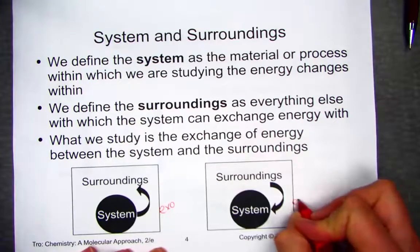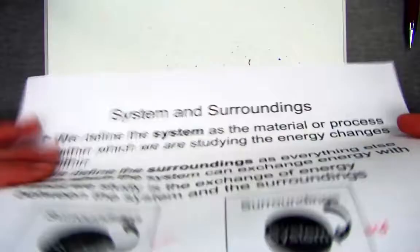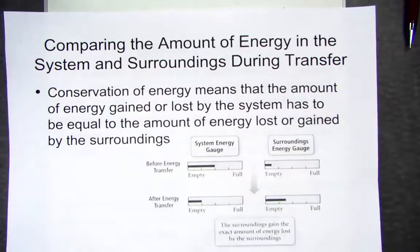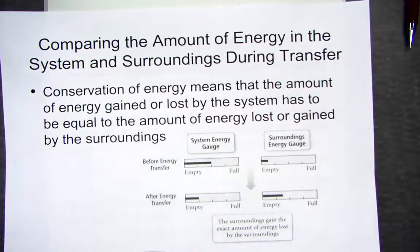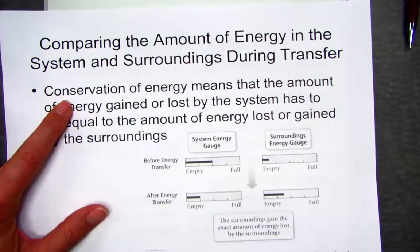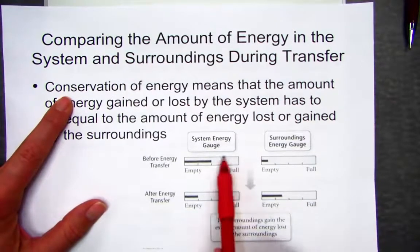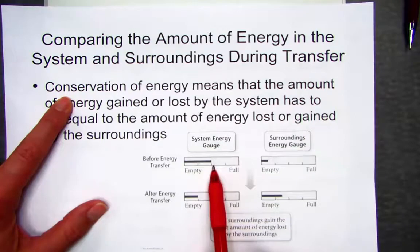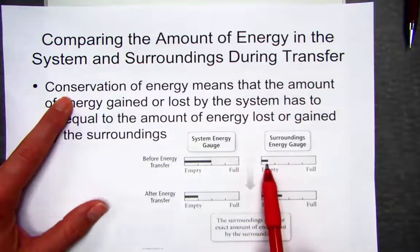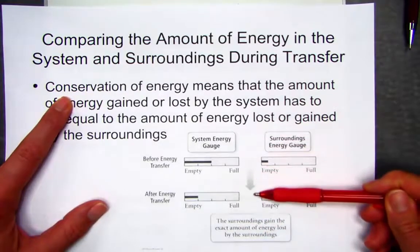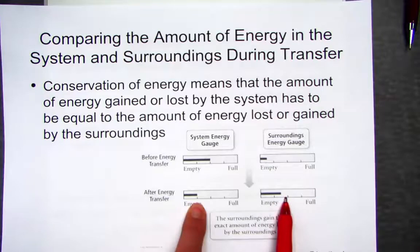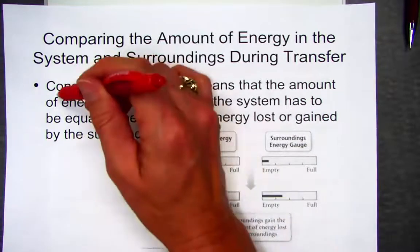It's keeping track of the energy flow between the surroundings and the system. Comparing the amount of energy in the system and the surroundings during a transfer lets us figure out if the system is gaining or losing energy, while realizing that the net change remains constant. The word conservation means to stay the same. If the system loses energy, an equal amount of energy is gained by the surroundings. The net lost by the system equals the net gained by the surroundings — energy is conserved.